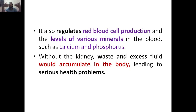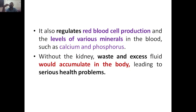The kidney itself regulates — not produces — the RBC production and the levels of various minerals in the blood such as calcium and phosphorus. Regulation means it supports or increases RBC production or decreases RBC production. If the kidney does not function properly, there will be an effect on RBC production, or there will be effects on mineral levels — they may go up or come down. These minerals such as calcium and phosphorus are essential molecules that should be present in the blood. If they get affected, it will also affect your blood pressure.